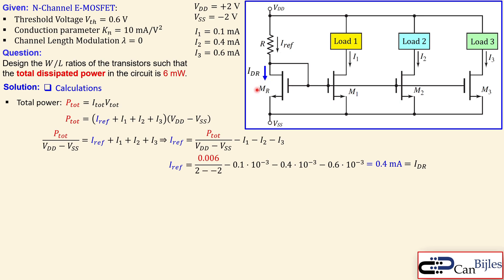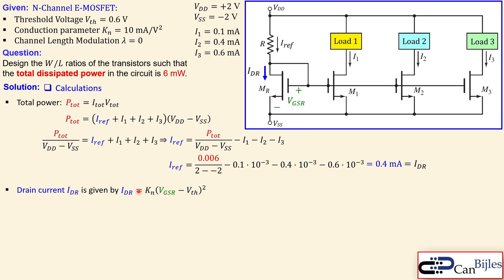The drain current of the reference MOSFET MR is 0.4 mA — the same as the reference current, since gate currents are all zero. The gates are connected in parallel to the other MOSFETs. The drain current for the reference MOSFET is given by the saturation region expression: I_DR = (K_N / 2)(V_GS_R − V_th)², where K_N is the conduction parameter.